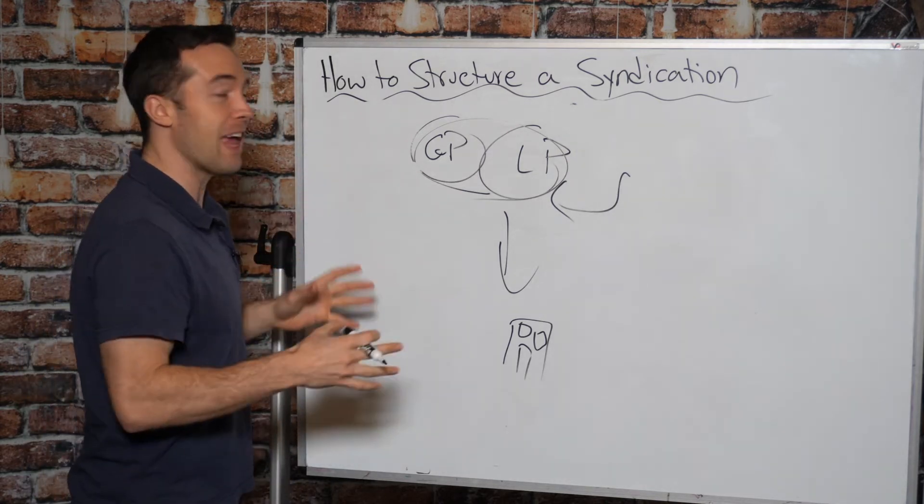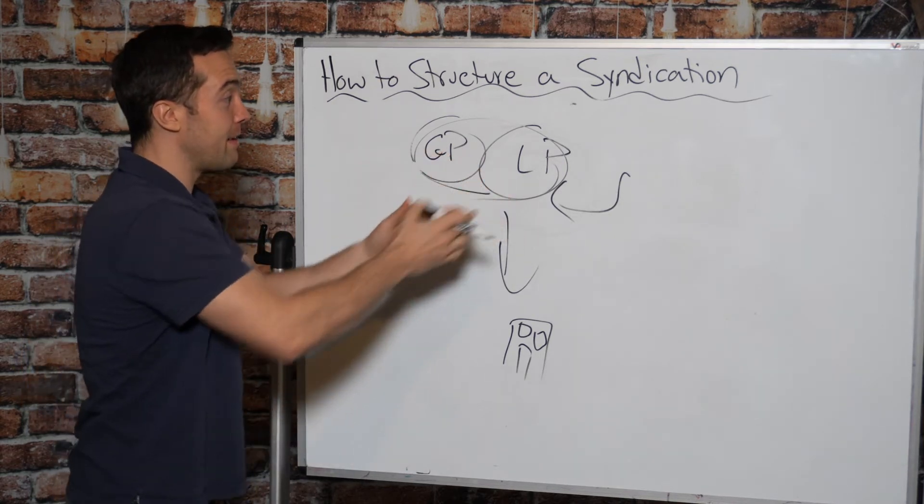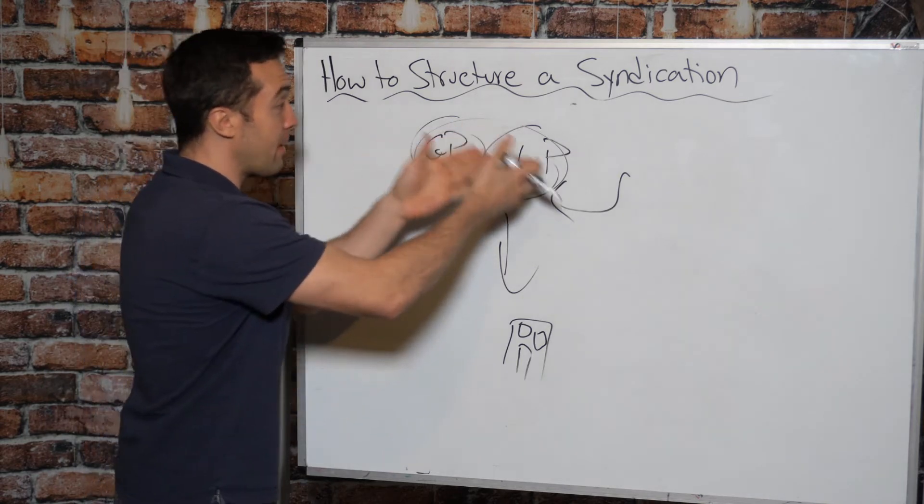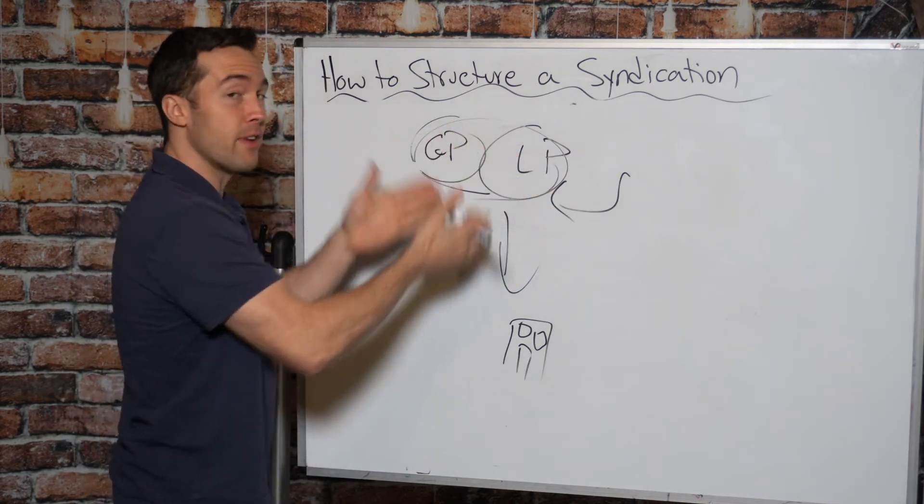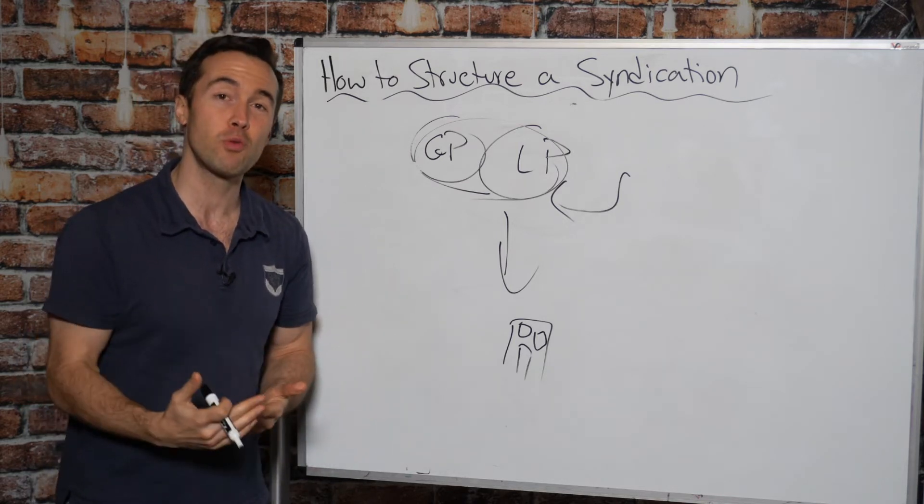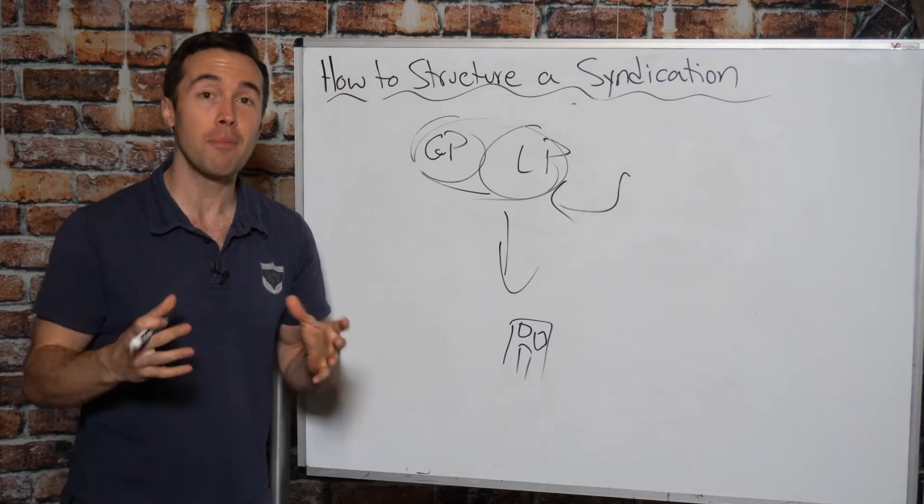So how does everybody get paid? So this is also a very important piece in structuring your syndication. The splits on how profits are distributed, that's going to really impact the investors. That's going to impact you as a general partner. You want to be incentivized. The investors want you to be incentivized, but the investors also want to hit their return targets. So how do you make this happen?